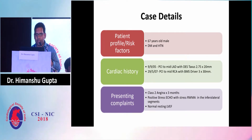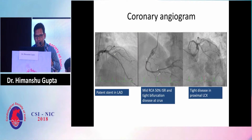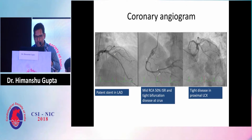He presented with a history of angina for three months with a positive stress echo showing wall motion abnormality in the inferolateral segments and normal resting ejection fraction. His initial coronary angiogram showed a patent LAD, a mid-RCA 50% ISR, a tight bifurcation disease at the crux in RCA, and a significant 80–90% stenosis in the proximal LCX.